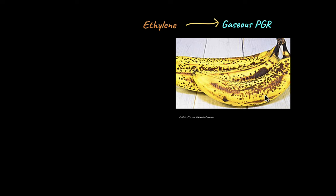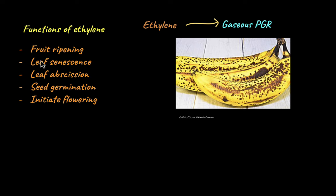This is possible because of the action of ethylene. The ripe fruits release ethylene gas which then diffuses out. The unripe fruits have receptors for this ethylene gas, and the ethylene gas binds to these receptors, which causes the unripe fruits to ripen as well. So that is one of the major functions of ethylene: fruit ripening.